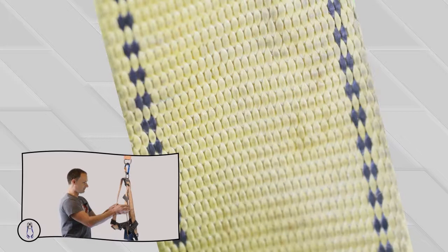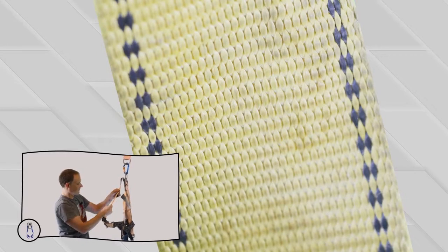Sunlight will bleach the harness, bleach it white or take the color away and also make it kind of brittle.